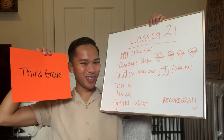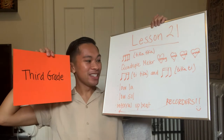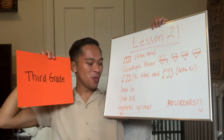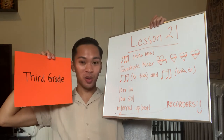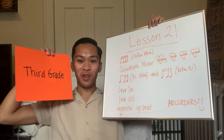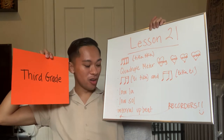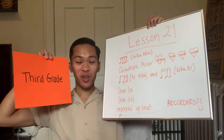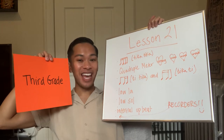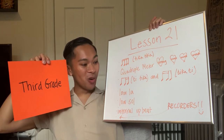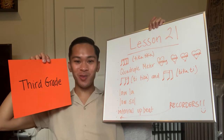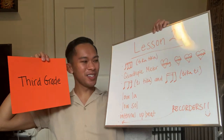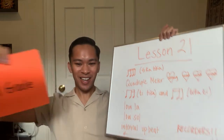And then these are things you learned in third grade, like tika and tika t. We're gonna go over low la, we're gonna go over low so, we're gonna review internal upbeat, and recorders — the most recent things we've done. So all these things we're doing today.